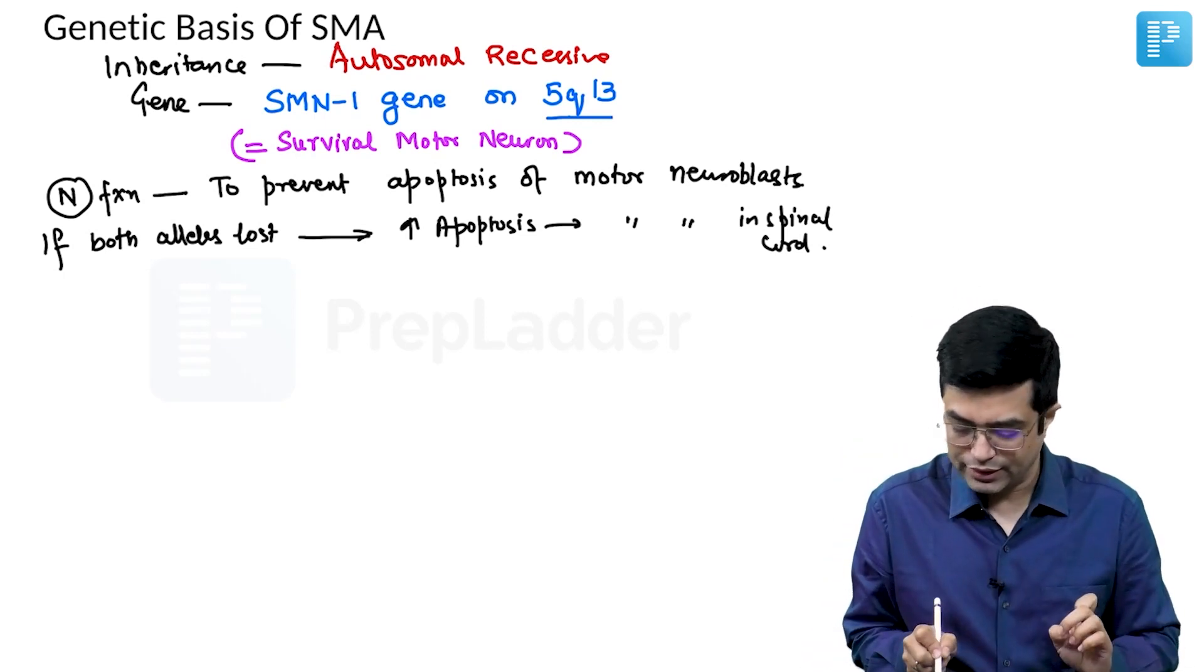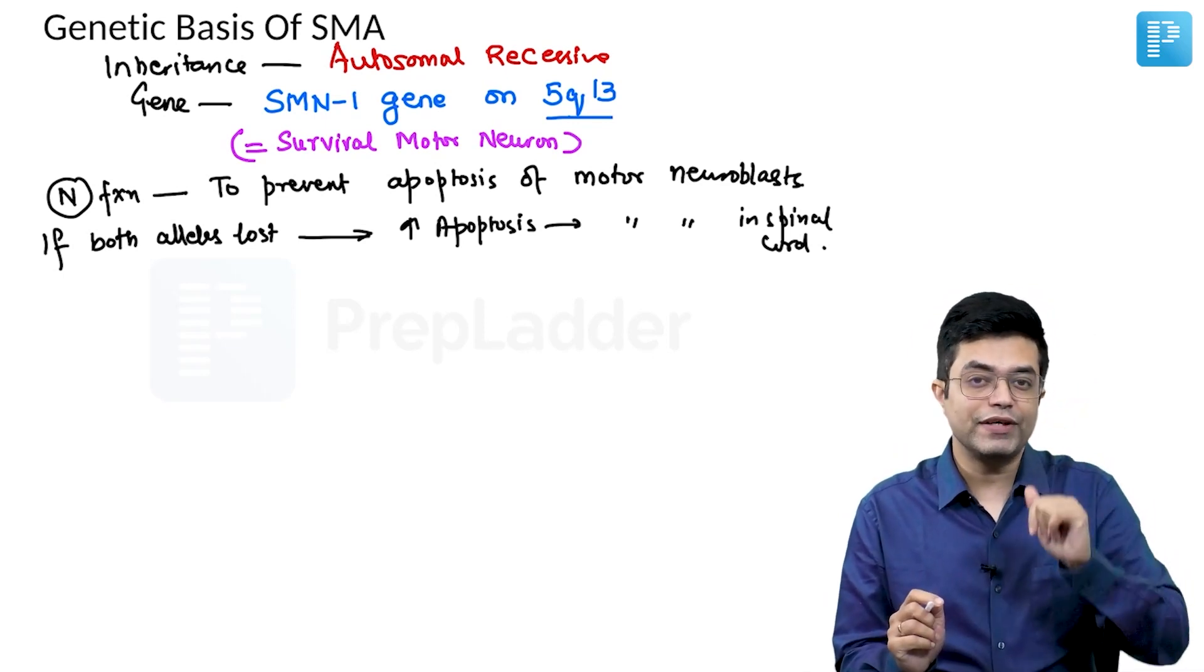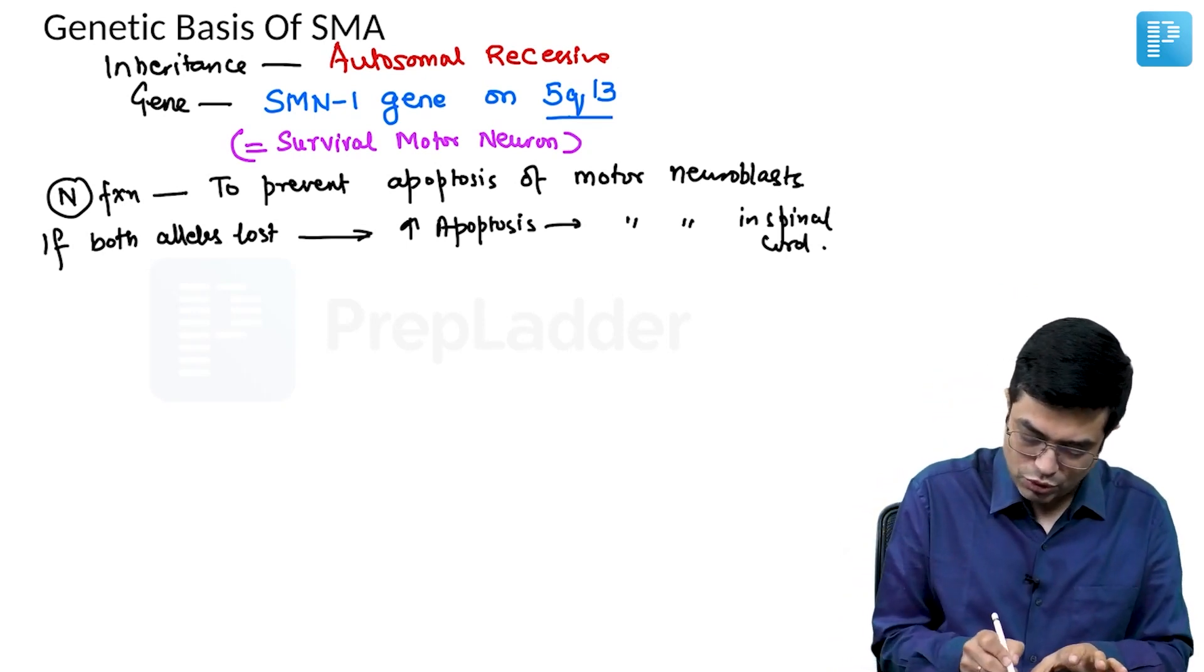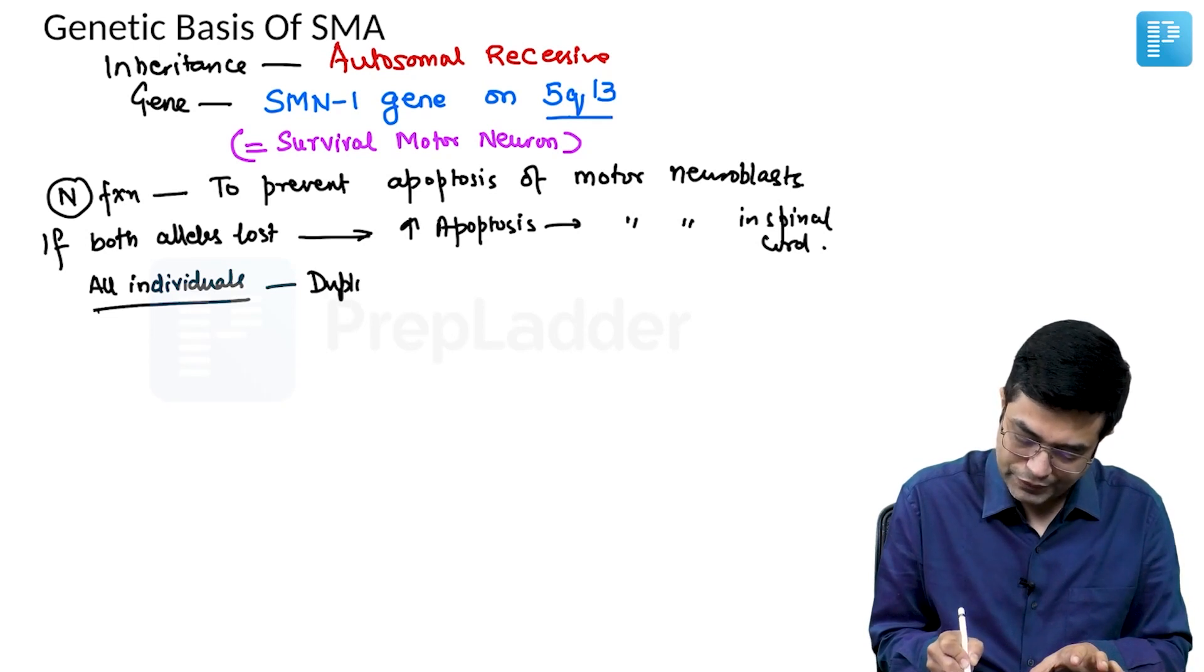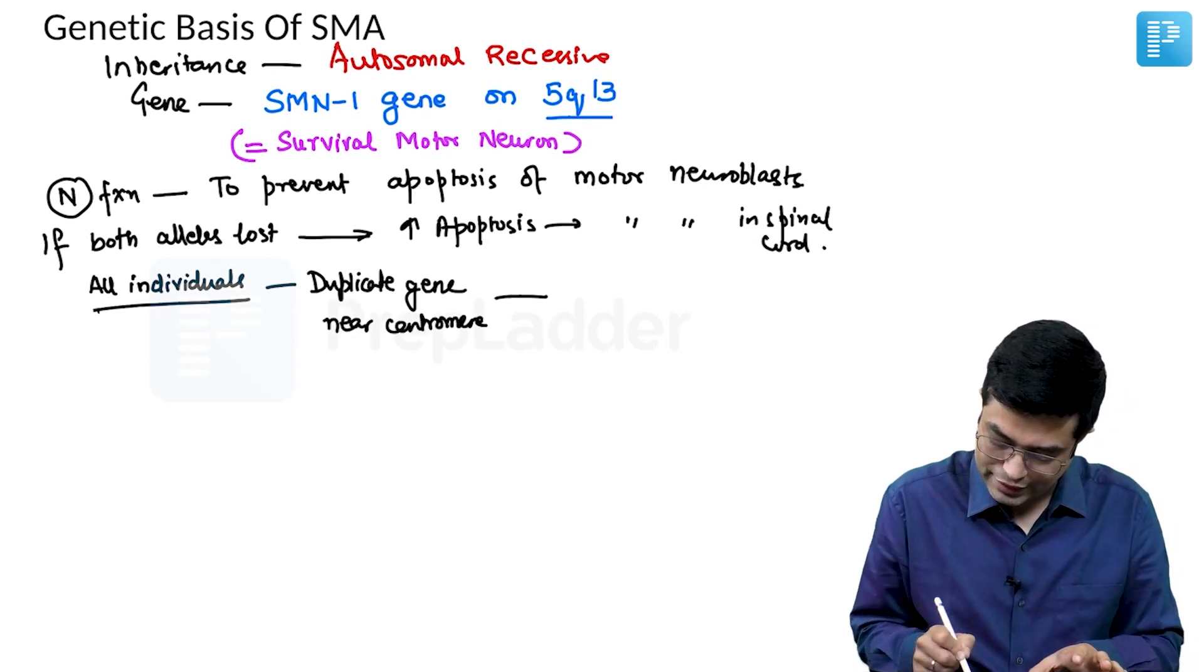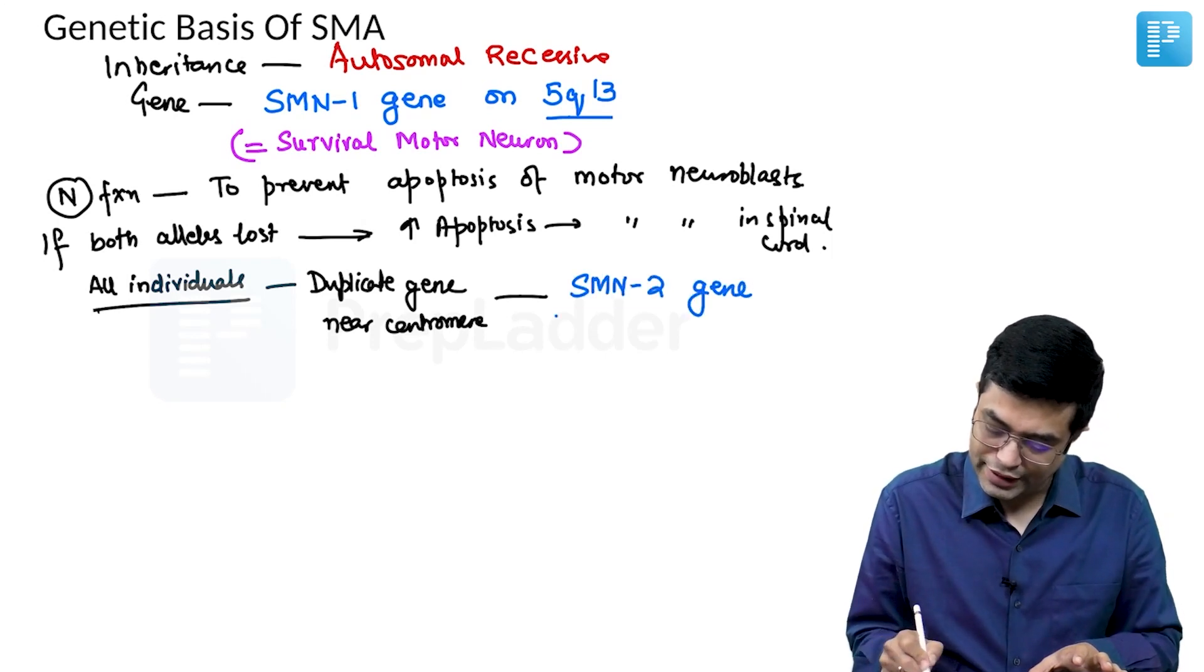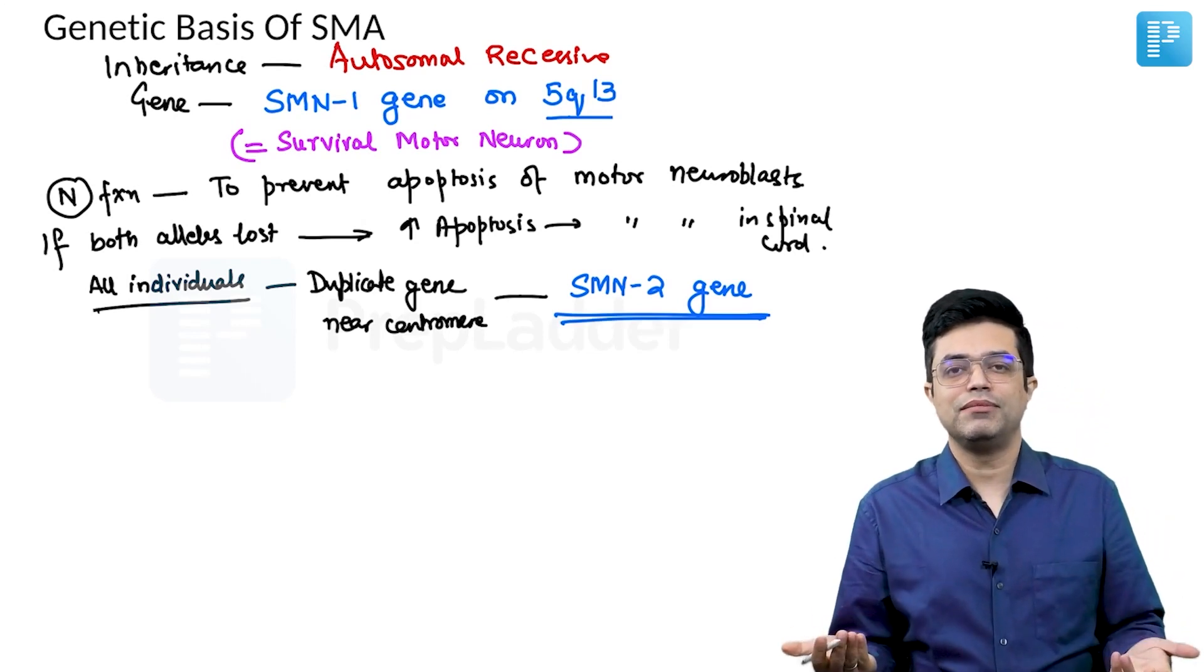Now there is a very interesting thing here. In all humans, you and me included, there is another copy of SMN called SMN2. It has a sister duplicate gene. In all individuals, there is also a duplicate gene present in the same location near centromere called SMN2. SMN2 is normally present in every person, but SMN2 is a very lazy gene.